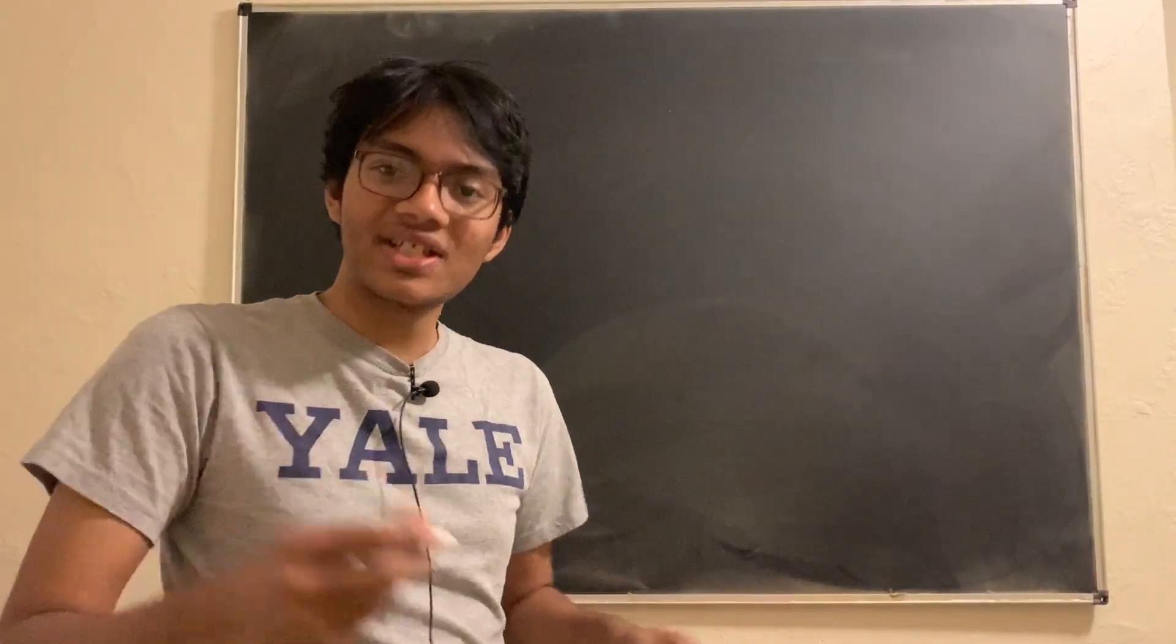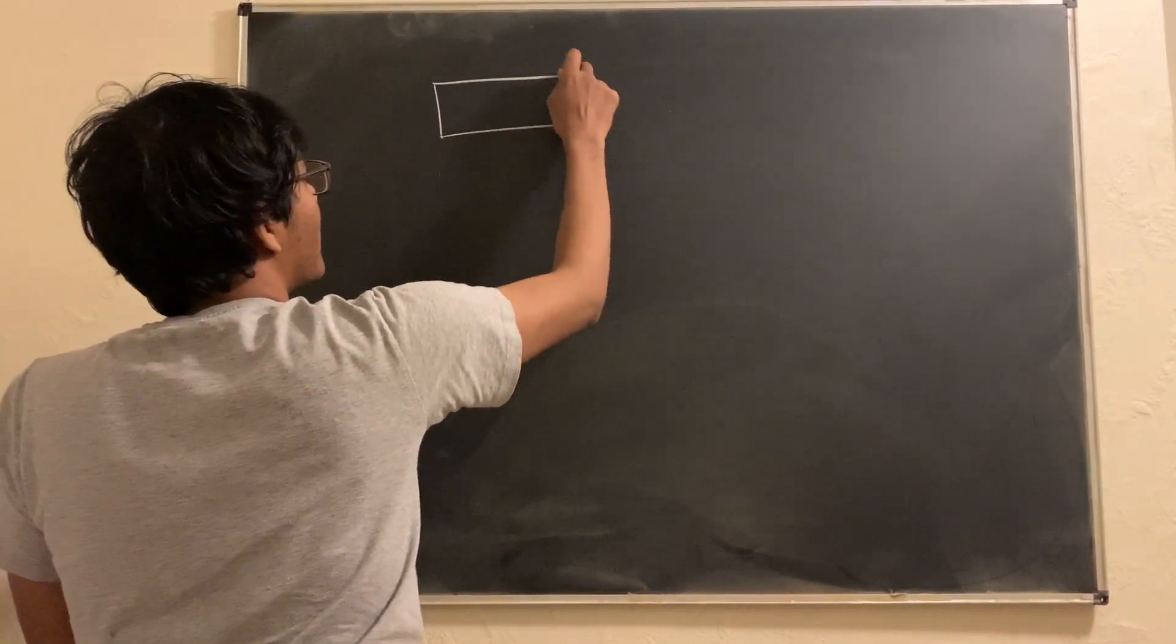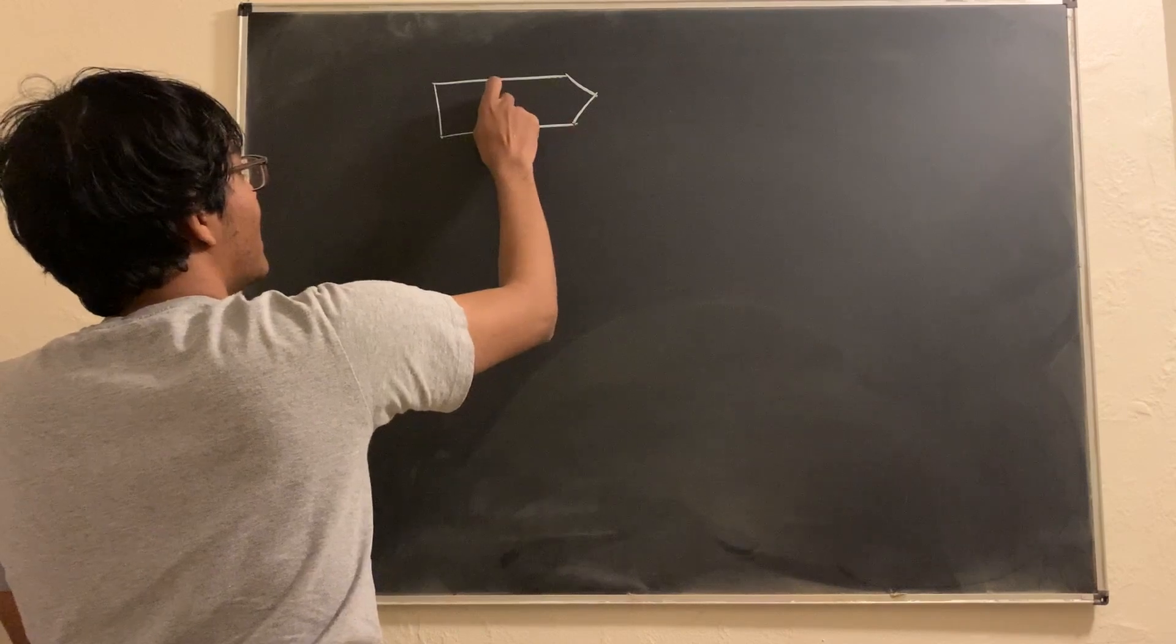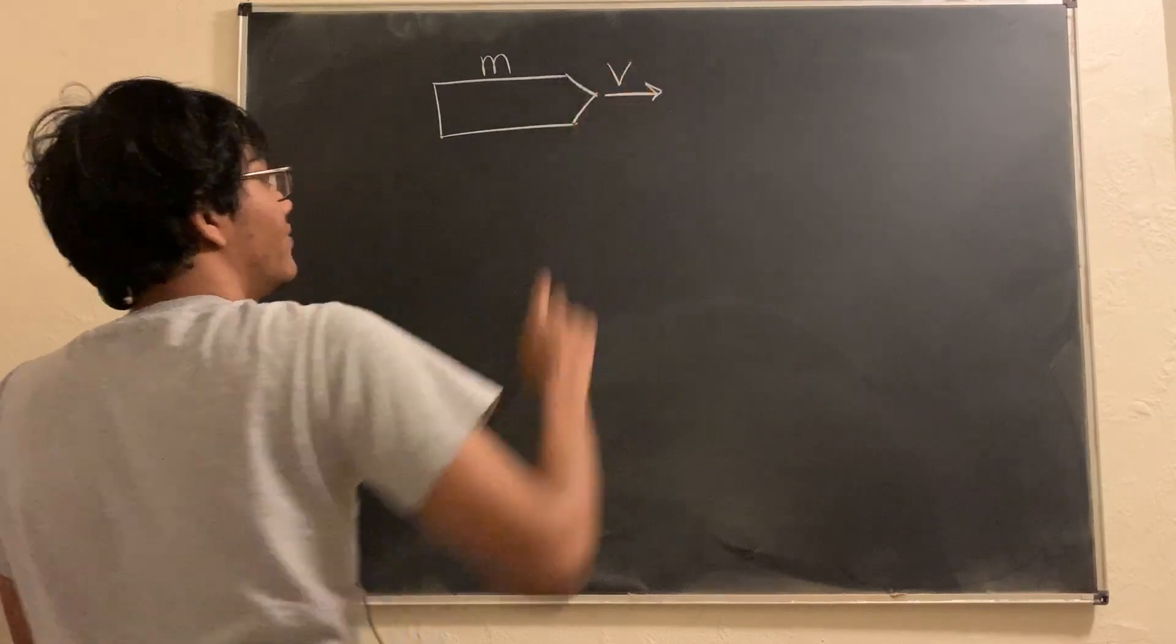Let's say we have a spacecraft. Here's our rocket. Now, the rocket has some mass. Let's say M. That's the mass of our rocket and our rocket is moving at some velocity V.